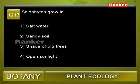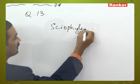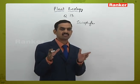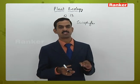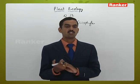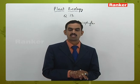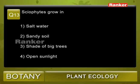Question 13: Sciophytes grow in: 1) salt water, 2) sandy soil, 3) shade of big trees, 4) open sunlight. Sciophytes are plants growing in shady regions; whatever light is available is sufficient for their photosynthesis. Plants of salt water are halophytes, sandy soil plants are psammophytes, and open sunlight plants are heliophytes. Shade of big trees is the correct option. Correct answer: 3.